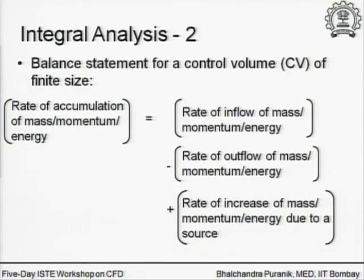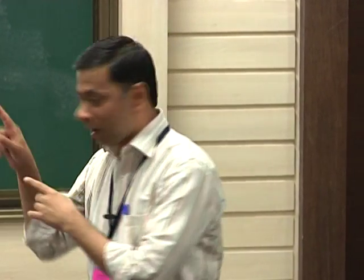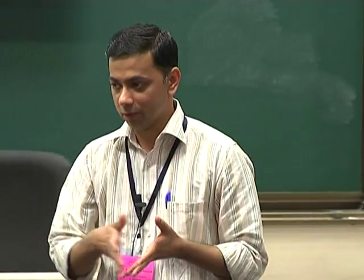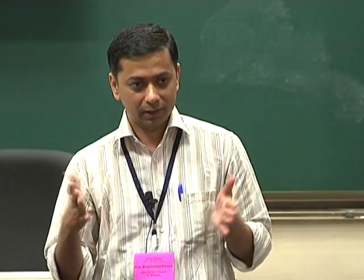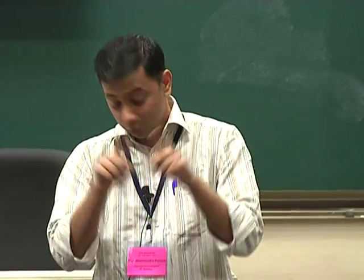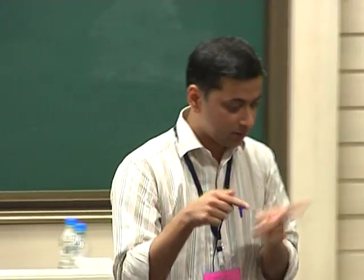Let us talk about energy. Momentum we will talk about later because momentum is slightly troublesome. Energy is again a scalar situation. Scalars such as mass and energy are easier to understand. Just like the mass balance statement, it is very intuitive. I have a control volume — something is coming in, something is going out. If there is a difference between those two, then the quantity has to accumulate. Same thing applies to energy.